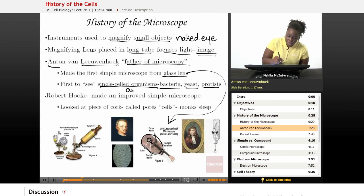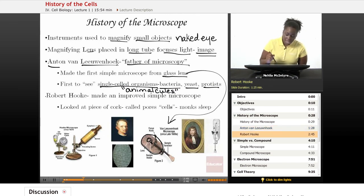which is a cool kind of funny name, animalcules, because at the time, of course, we hadn't identified all of those structures, all of those different organisms that we have now. Another very important scientist to the study of microscopy is Robert